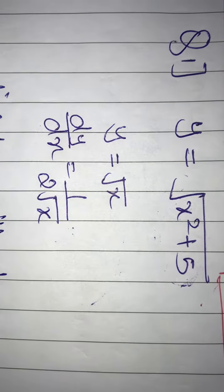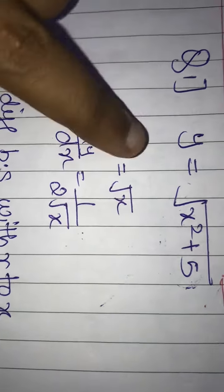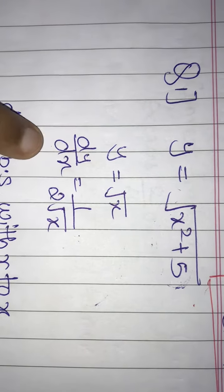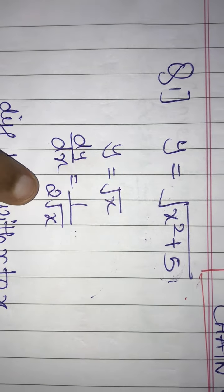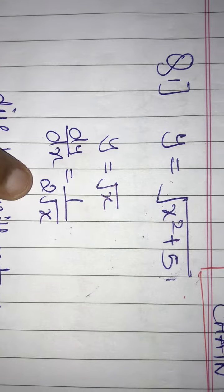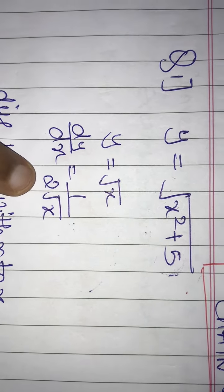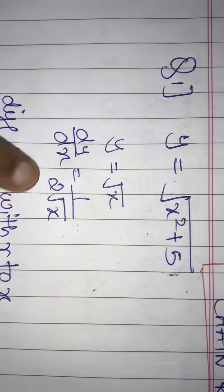If we have a question that y is equal to root x, you have a direct formula that dy/dx is equal to 1 upon 2 root x. But our question is not in root x form, but root of x square plus 5. So this type of question we solve in chain rule.